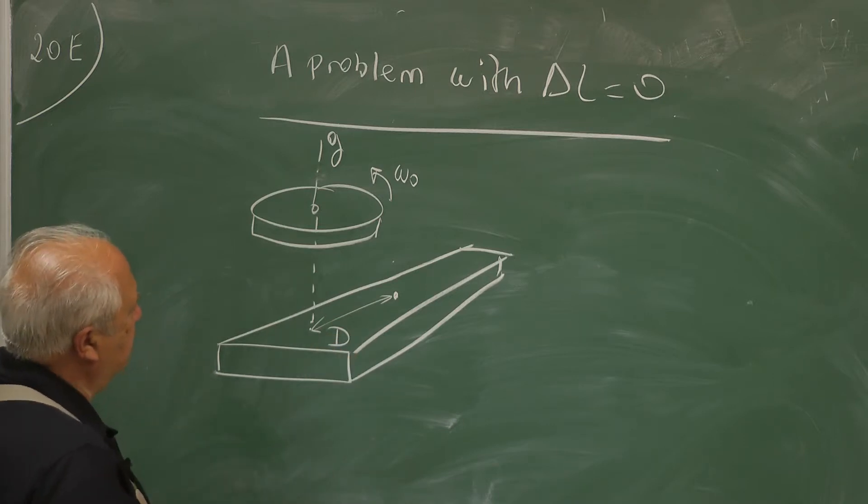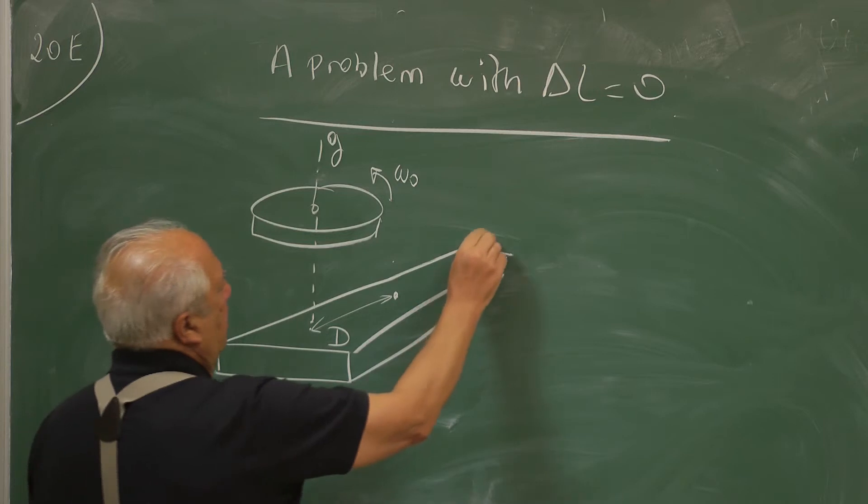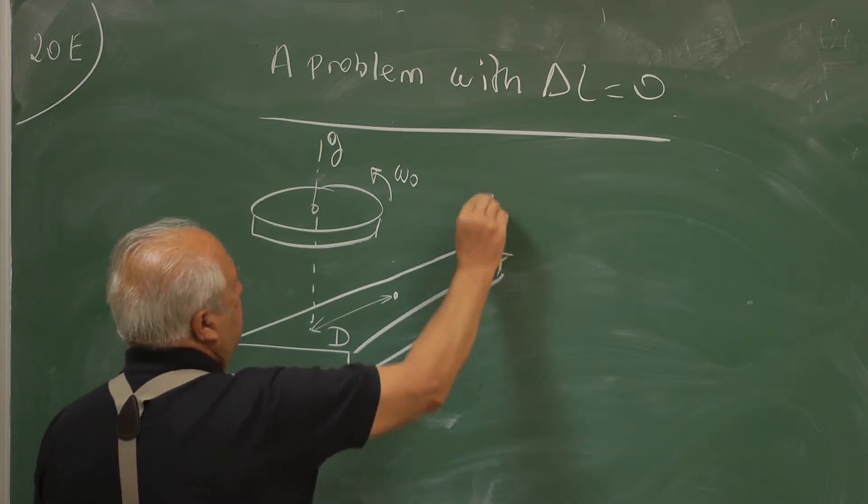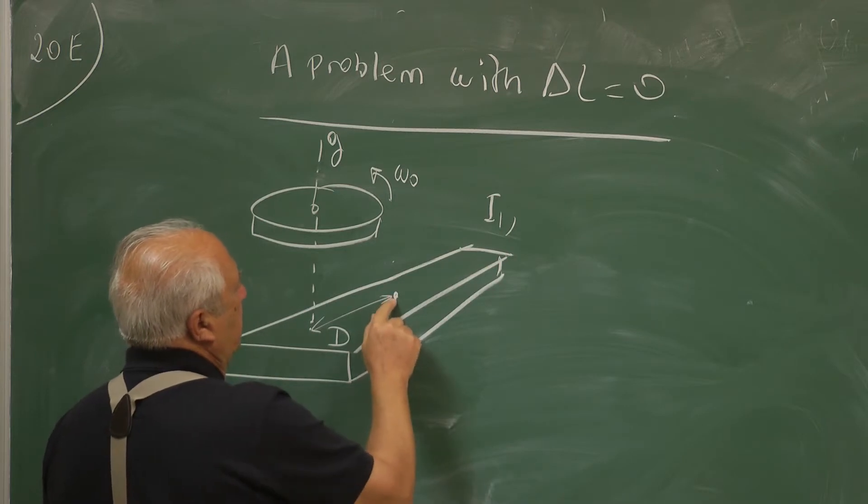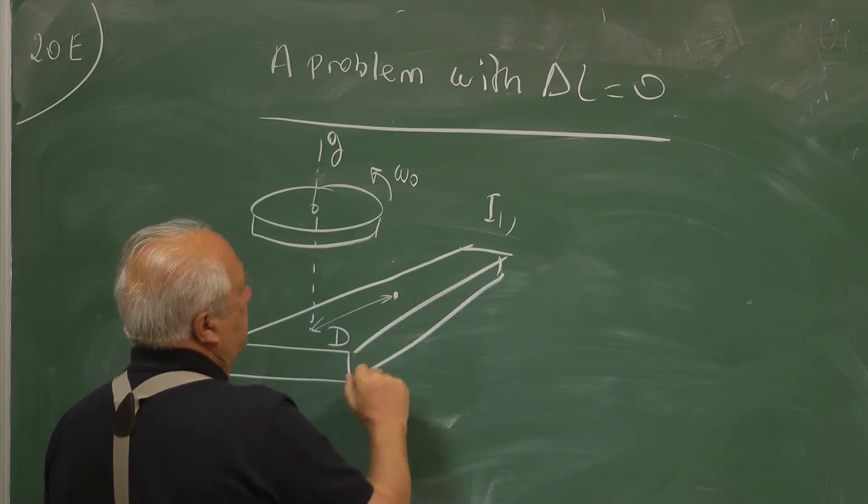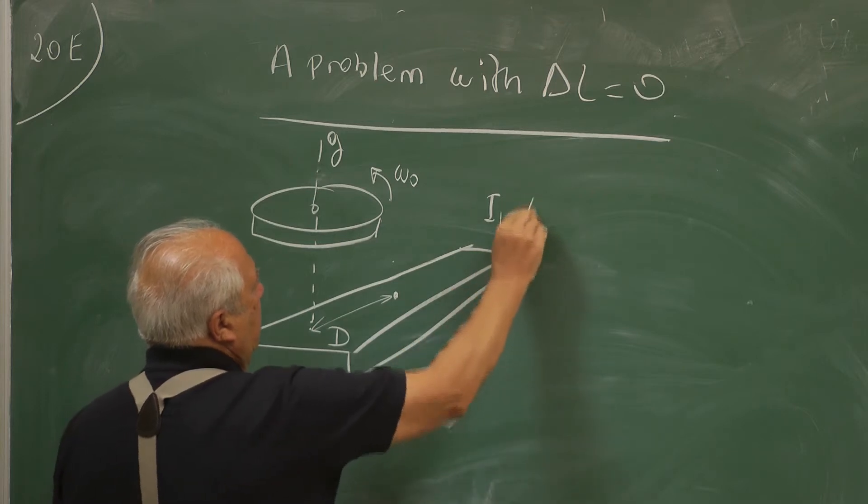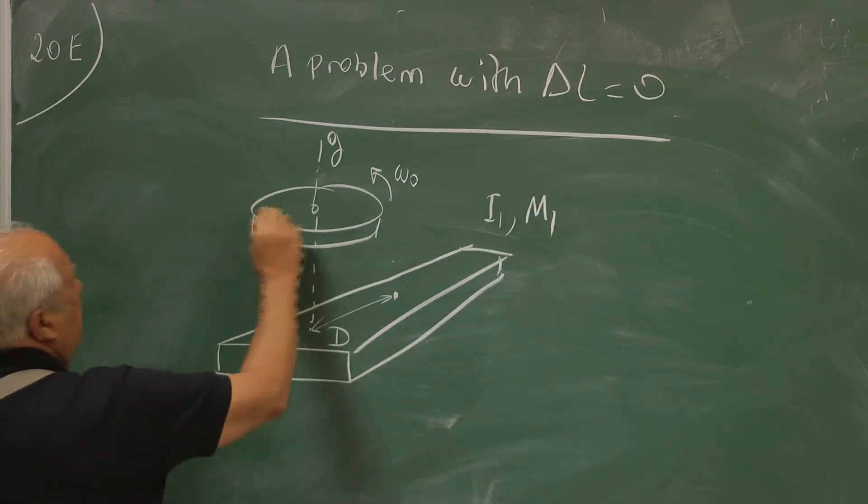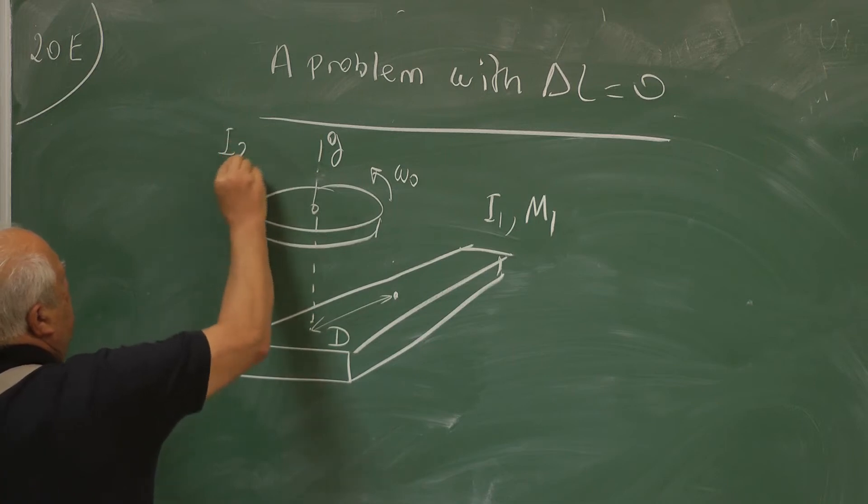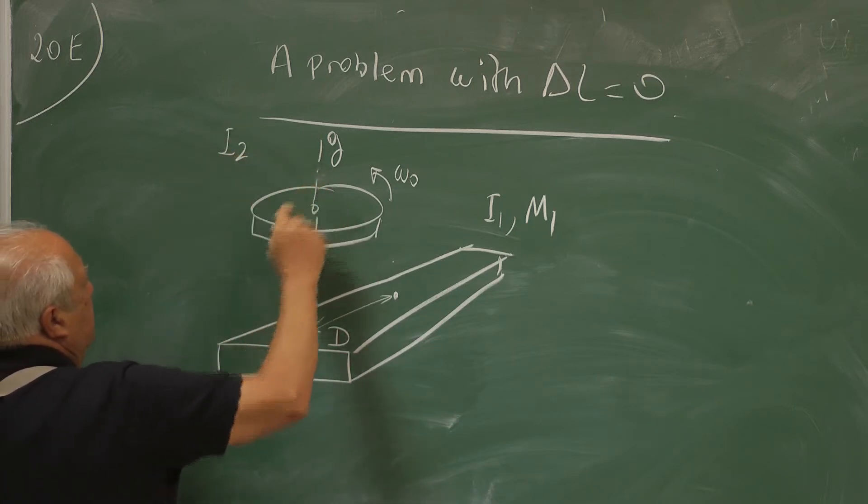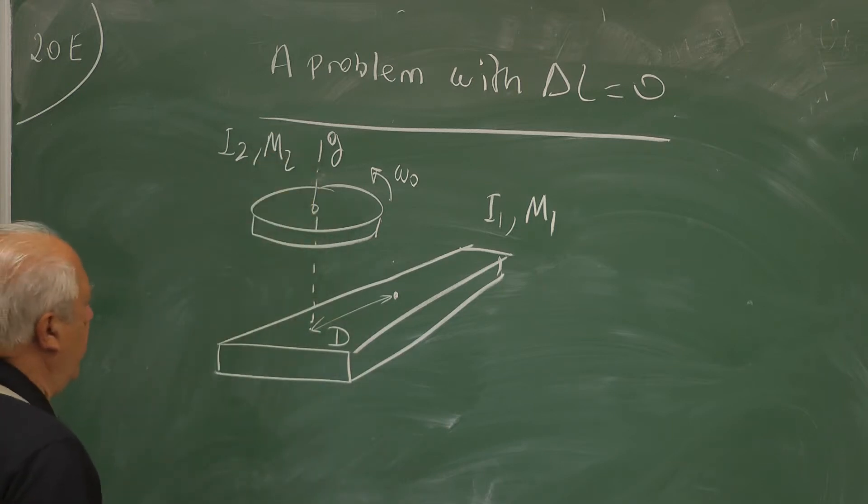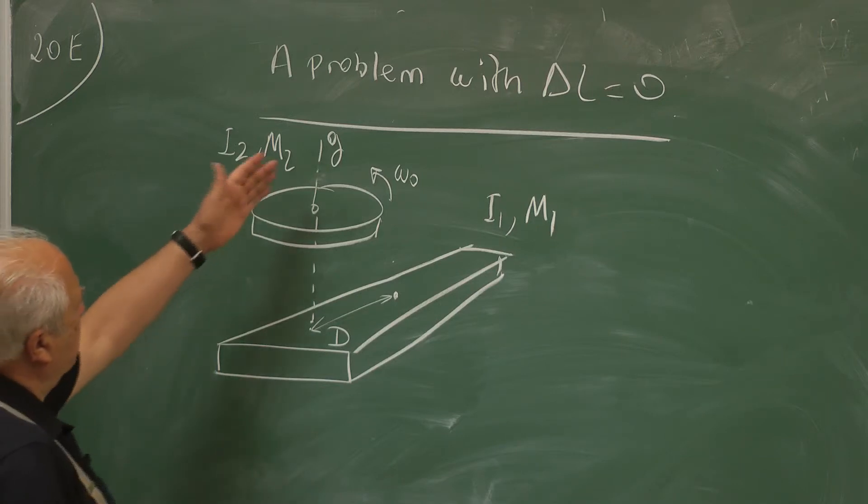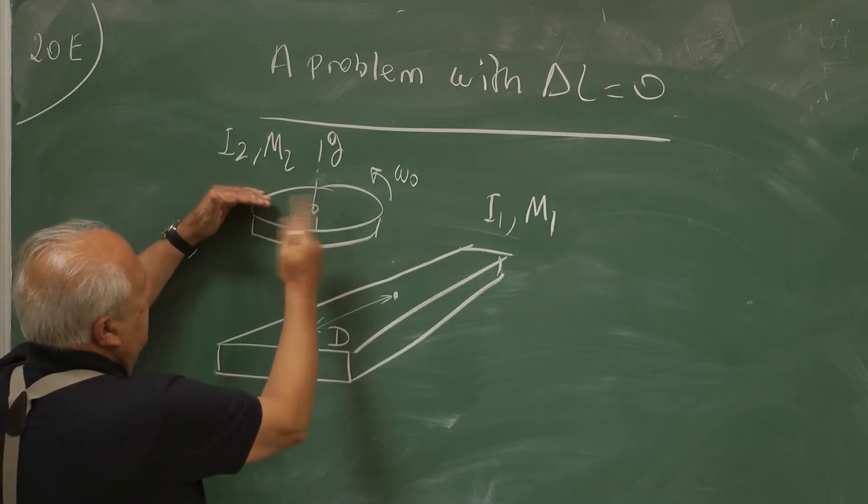The parameters in the problem is this has moment of inertia about its own center of mass and mass m1. And this one has moment of inertia I2 to rotate about its axis and then mass m2. This is rotating with omega 0.